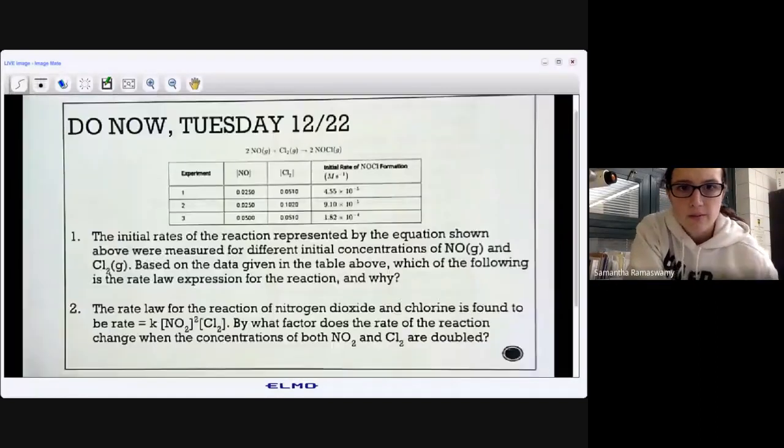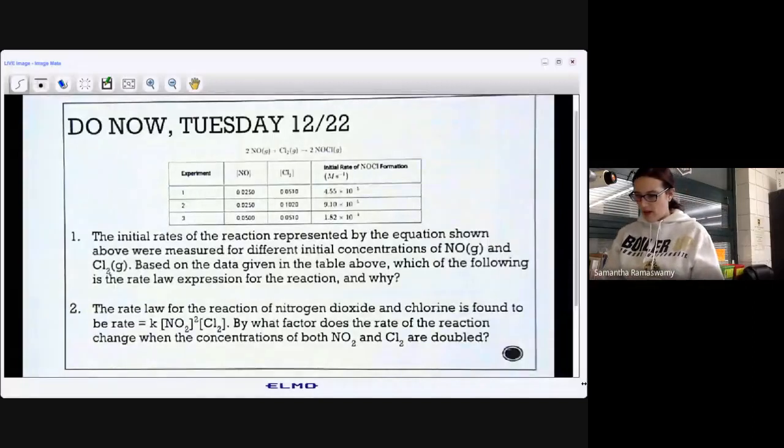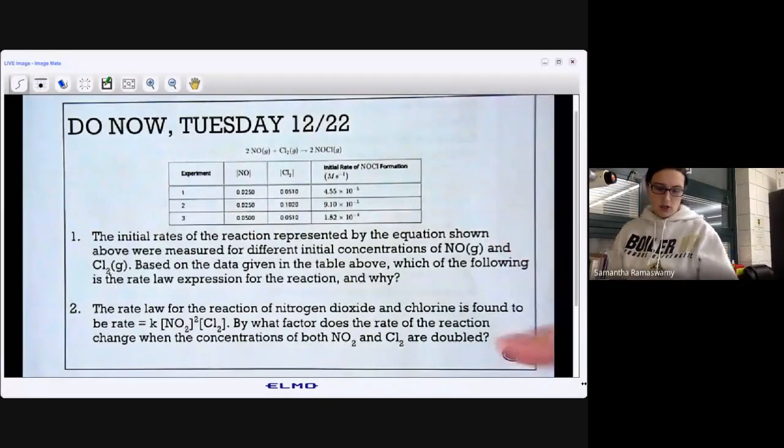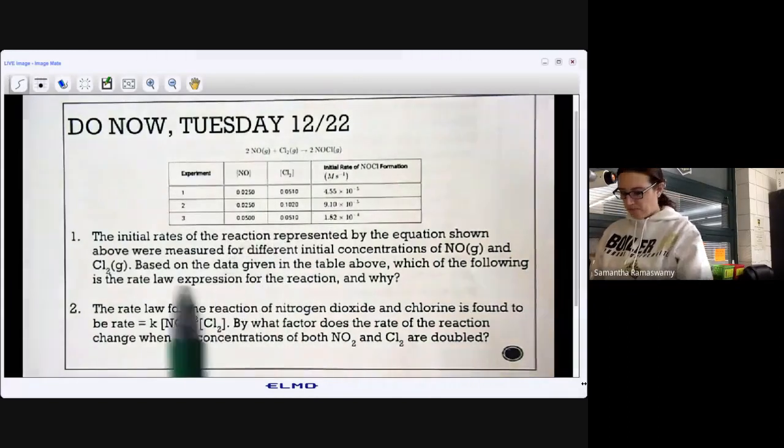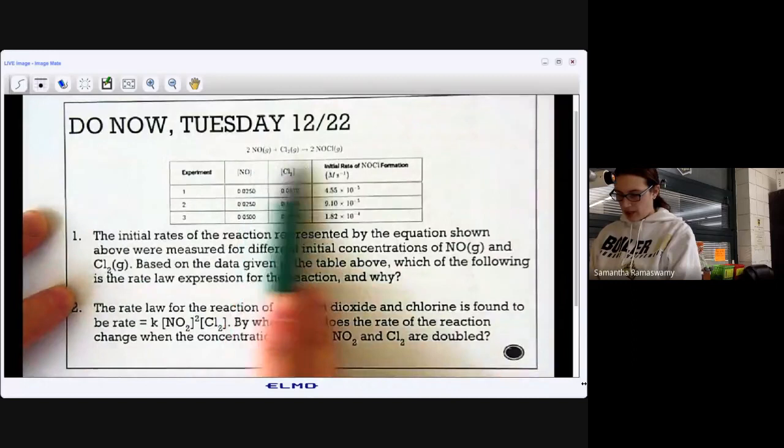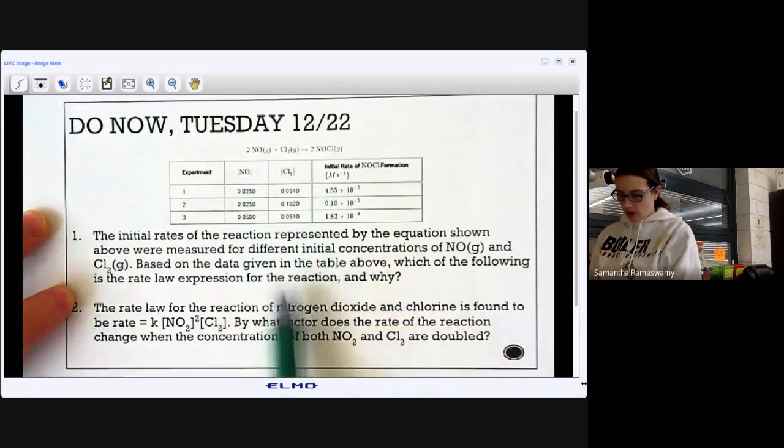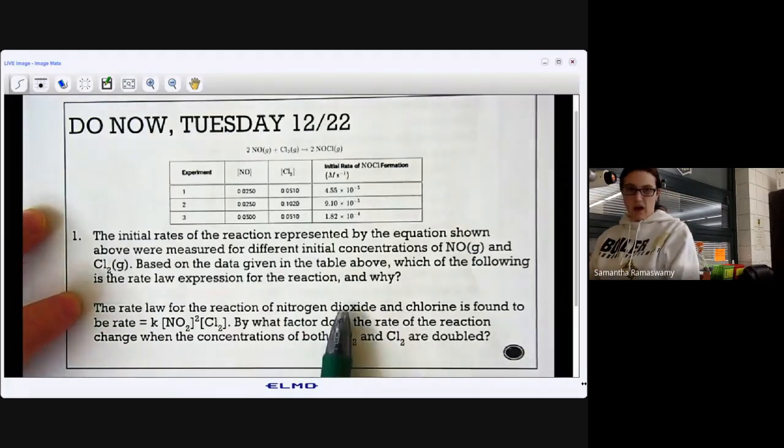And then we'll go through the do now. Okay, so for this do now, again, there are two questions. So question one is dealing with this table up at the top. So the initial rates represented by this equation up here are given in the table. Based on the data, which of the following is the rate law for the reaction and why?